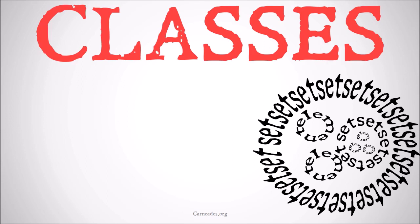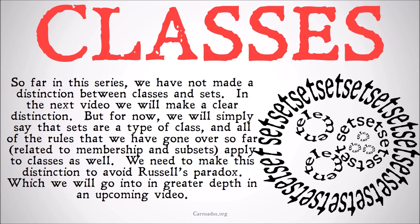Is it a set? We don't know yet. So far in this series we've not made a distinction between classes and sets, but in the next video we're going to make a very clear distinction. For now we simply say that sets are a type of class — a claim we'll prove later — and all of the rules related to membership and subsets apply to classes as well. Classes are a broad category; sets are a specific category, and we'll see why certain classes don't count as sets when we look at Russell's paradox.